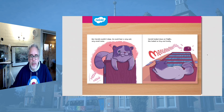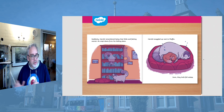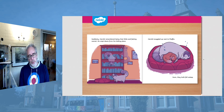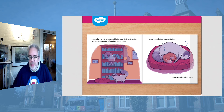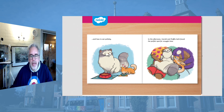Can you remember what Harold did next? Suddenly, Harold remembered being that little and feeling scared. He crept down from his hiding place and snuggled up next to Muffin. Soon they both fell asleep. The next day, Harold taught Muffin how to play nicely, how to nap properly, and how to eat politely. In the afternoon, Harold and Muffin both found the perfect spot for snuggle time.